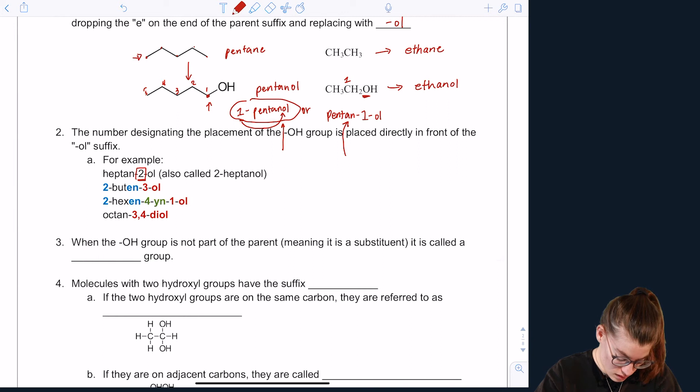Now this is interesting because we have 2-butene-3-ol. Now the 2 here represents the placement of the double bond. And the 3 represents the placement of the alcohol. You could have also written this like this: but-2-en-3-ol. And I like doing this because it's easier to follow. I see that this 2 is directly in front of the suffix that tells me I have a double bond. And the 3 is right in front of the suffix that tells me I have an alcohol. So I know this 2 represents the double bond placement. And this 3 represents the alcohol placement.